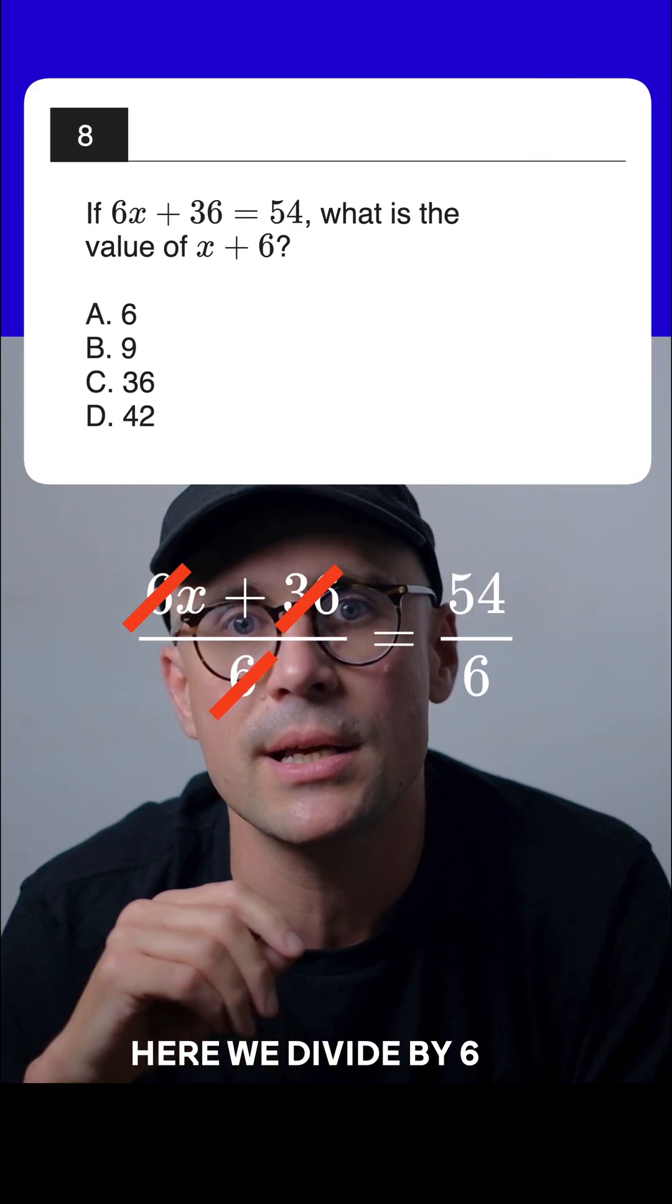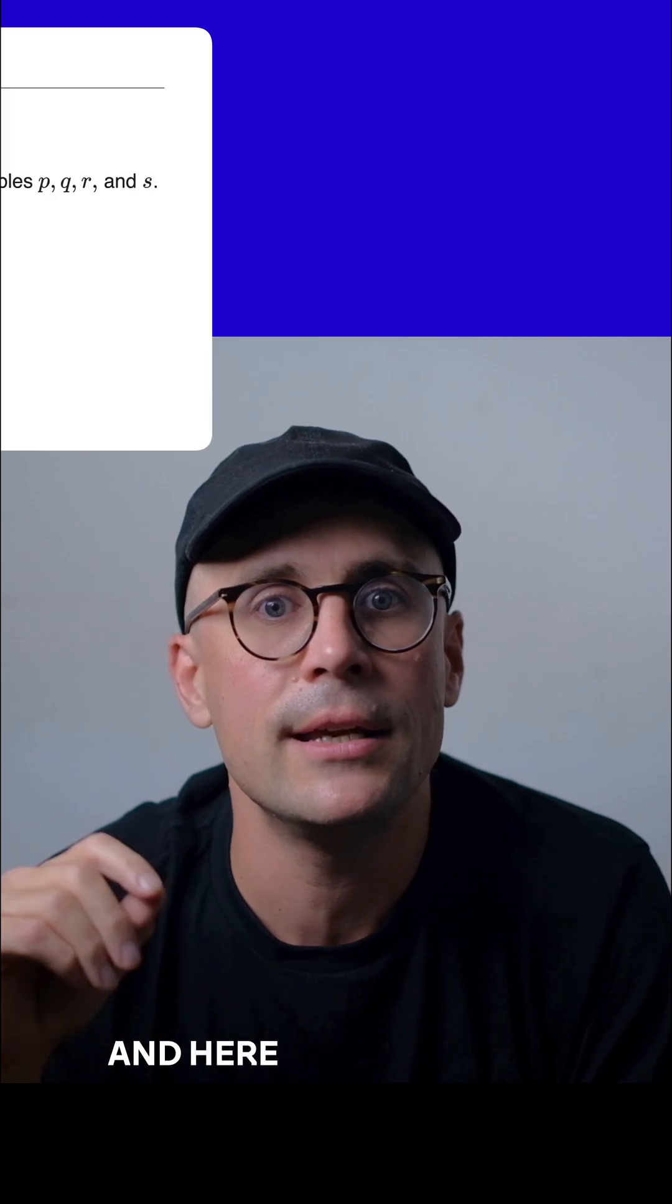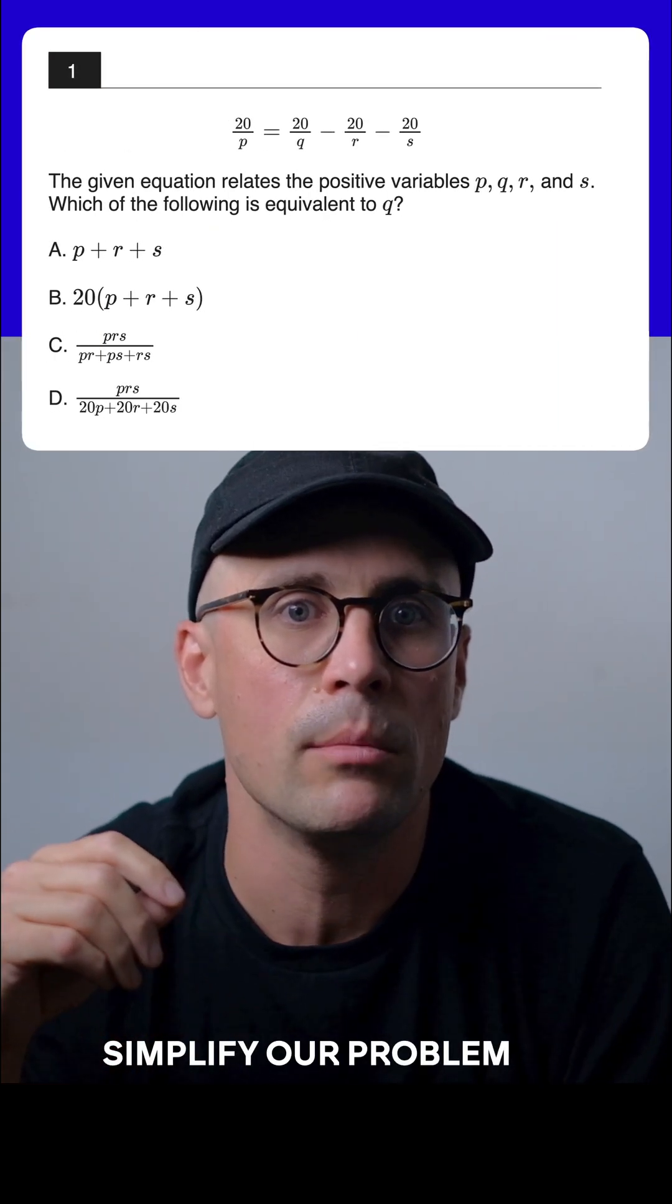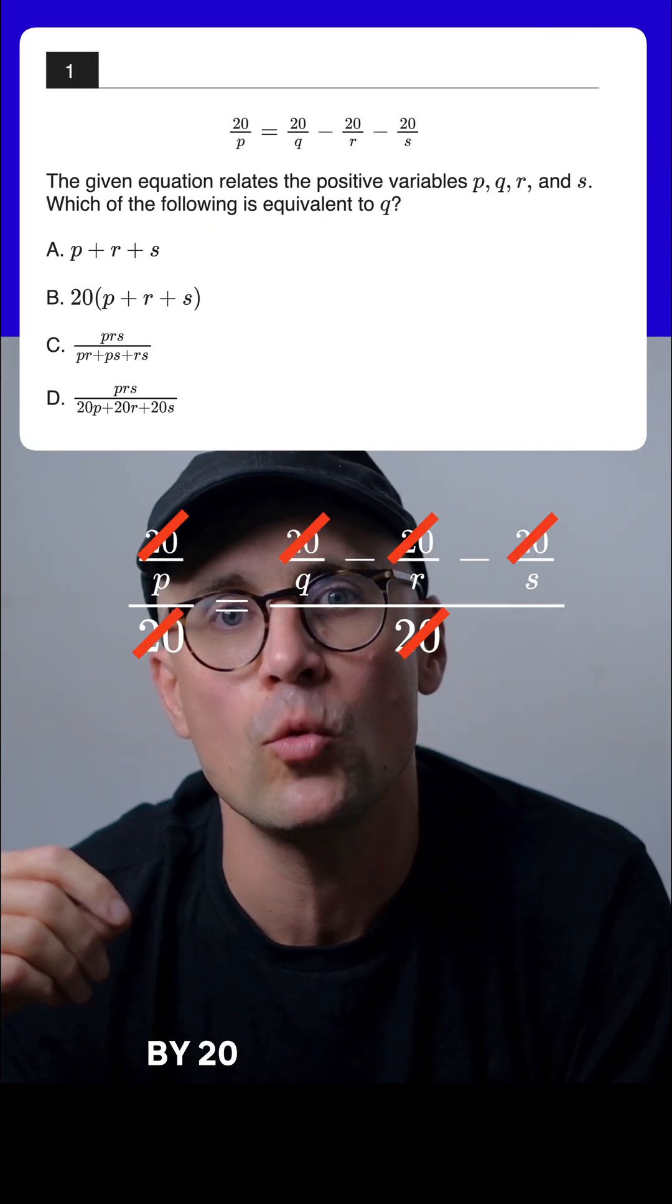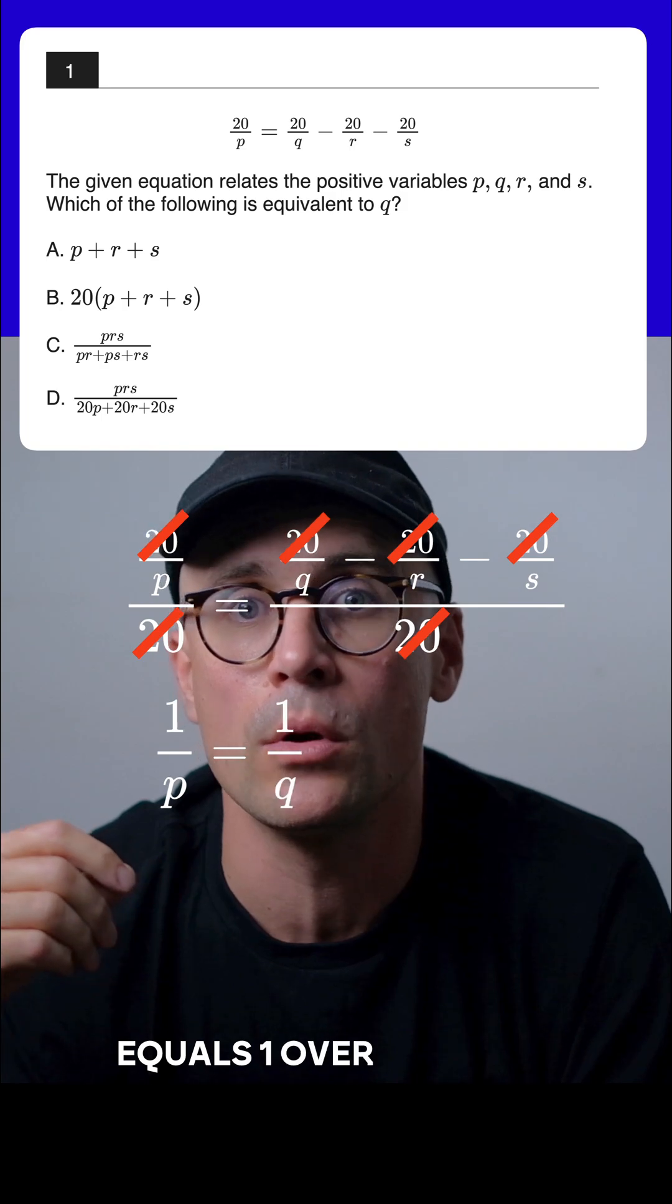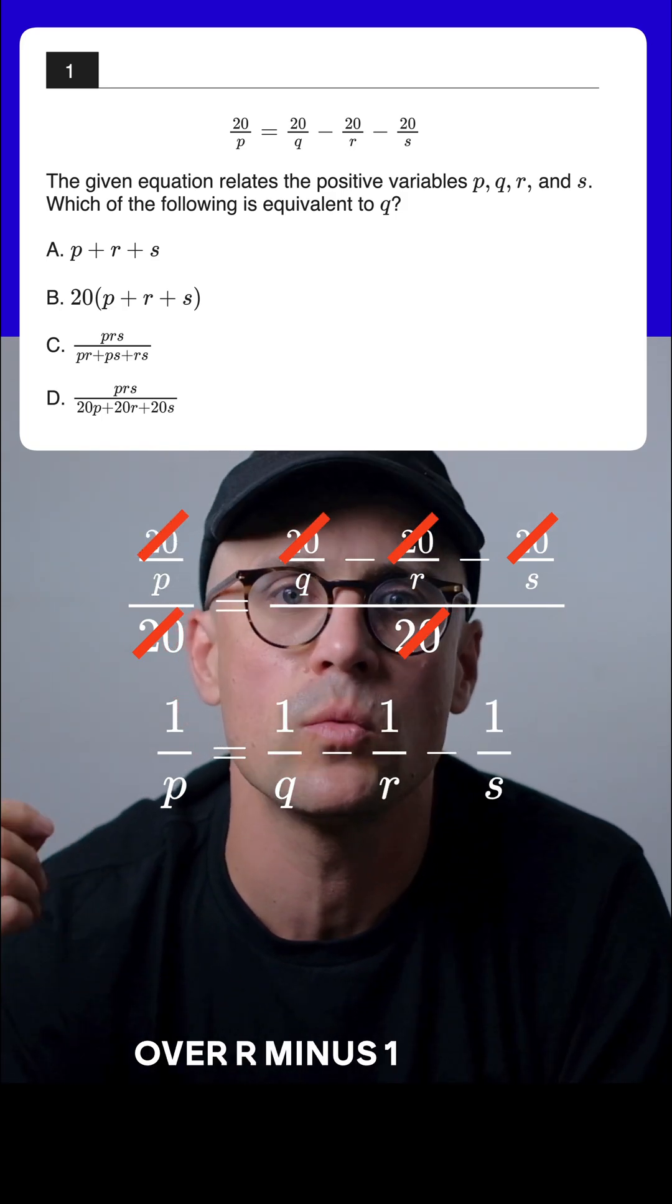Here we divide by 6 to solve directly for x plus 6. And here we can vastly simplify our problem by dividing every term by 20 to get 1 over p equals 1 over q minus 1 over r minus 1 over s.